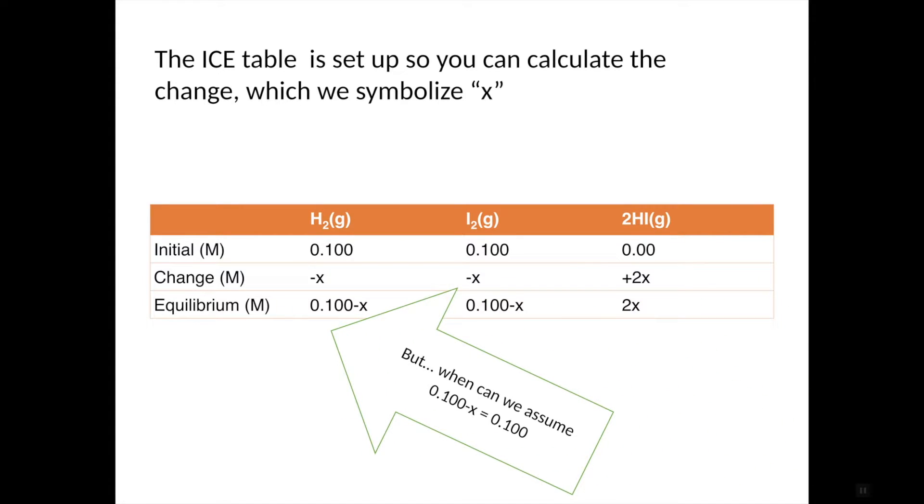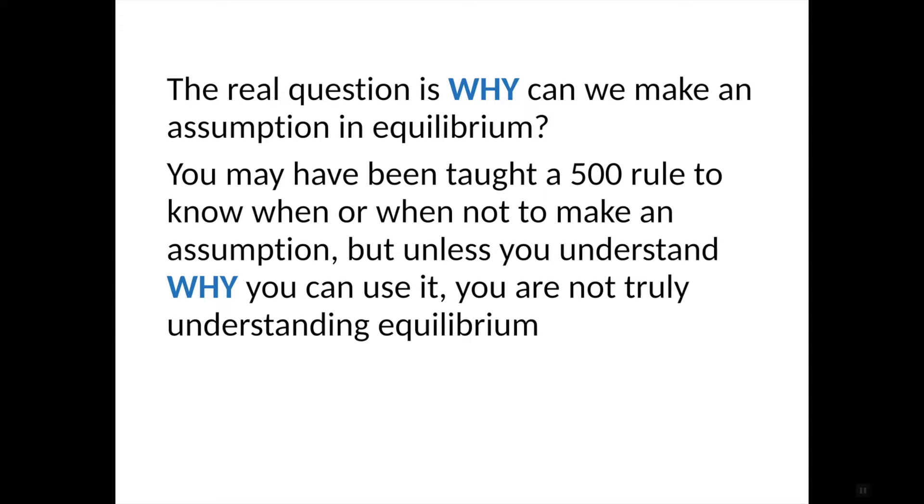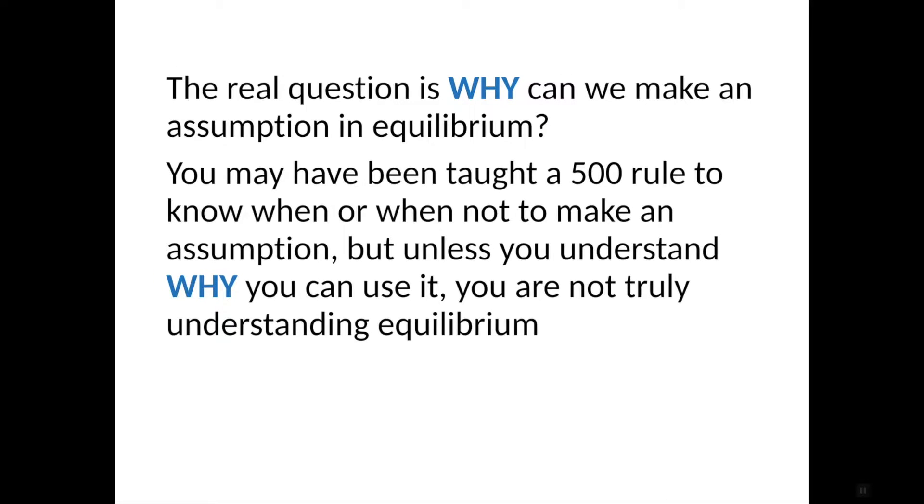To make the math easy, you may have learned that we can make an assumption that the reactants minus this change X can be assumed to be 0.100. So let's understand why. You may have been taught a 500 rule to know when or when not to make an assumption, but unless you understand why you can use it, you're really not understanding equilibrium.